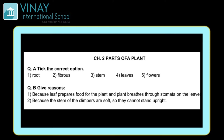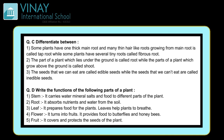Now let's move to Question C: differentiate between. First one — tap root and fibrous root. Some plants have one thick main root and many thin hair like roots growing from the main root; this is called a tap root. Kuch plants mein ek thick main root hota hai aur us mein se chote chote thin hair like roots grow hote hain — is ko hum tap root kehte hain.